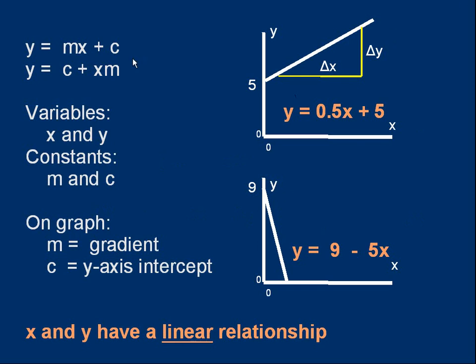First of all, the equation itself could be written in a slightly different format. For example, y is c plus xm, and you need to be able to recognize the equation even if it's in a different format. The important point about the equation is there are two variables in it, x and y. These are the quantities that can change. And there are two constants, m and c. These are fixed values.